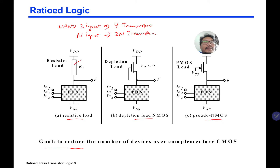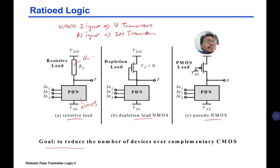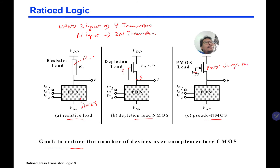Resistive load simply replaces the PMOS with a resistor — the NMOS pull-down network is still there just like in static complementary CMOS, but the PMOS is removed and replaced with a resistor. Depletion load connects the gate and source of an NMOS together, giving a sort of constant current. The pseudo NMOS uses a PMOS connected to ground (VSS), so it is always on — if you put zero at the gate of the PMOS, the transistor is on.